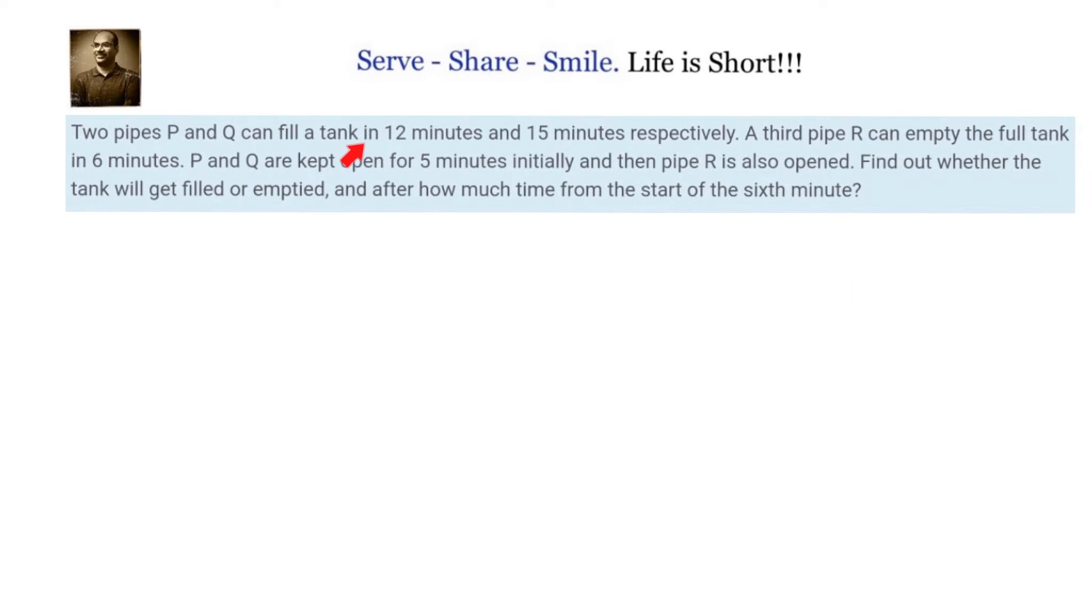Two pipes P and Q can fill a tank in 12 minutes and 15 minutes respectively. A third pipe R can empty the full tank in 6 minutes. P and Q are kept open for 5 minutes initially and then pipe R is also opened. Find out whether the tank will get filled or emptied and after how much time from the start of the 6th minute.